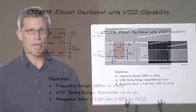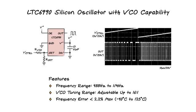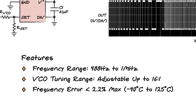The first part in the family is the LTC6990 oscillator with VCO capability. This part has a frequency range of 488 Hz to 1 MHz. And when used as a VCO, it has a full tuning range of up to 16 to 1.